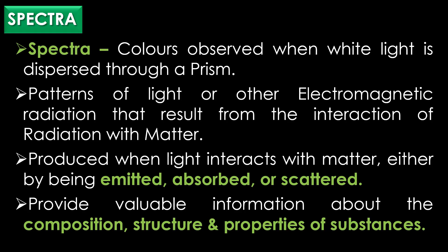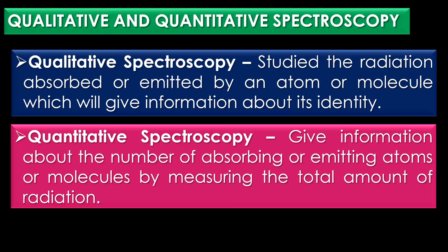Spectra — singular: spectrum — are the colors observed when white light is dispersed through a prism. Spectra are the patterns of light or other electromagnetic radiation that result from the interaction of radiation with matter. Spectra can be produced when light interacts with matter by being emitted, absorbed, or scattered. By analyzing the spectrum of a light source, spectra provide valuable information about the composition, structure, and properties of substances.